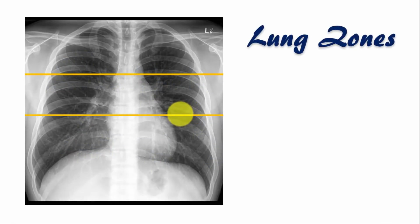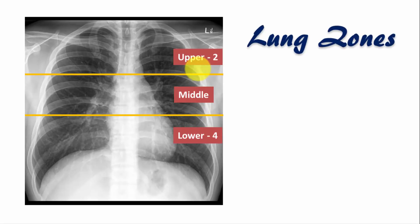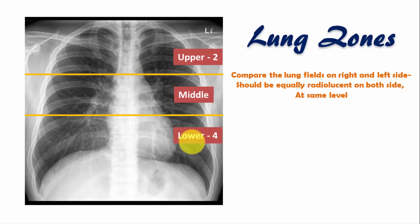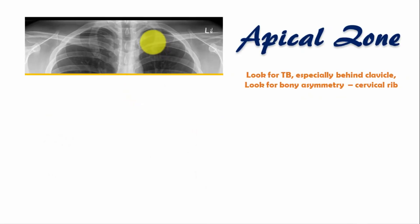Now let's inspect the lung fields. Divide the lung fields into three zones: upper, middle, and lower. The upper zone is the area above the anterior ends of the second rib, the lower zone is below the anterior ends of the fourth rib, and the middle zone is between the anterior ends of the second and fourth ribs. Compare the lung fields on the left and right side and comment on radiolucency — normally it should be equal on both sides at the same level. In the apical region, look for initial signs of tuberculosis, especially behind the clavicles, and check for any cervical rib or bony asymmetry.